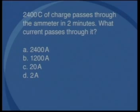2,400 coulombs of charge passes through the ammeter in 2 minutes. What current passes through it? A, 2,400 amperes. B, 1,200 amperes. C, 20 amperes. Or D, 2 amperes.